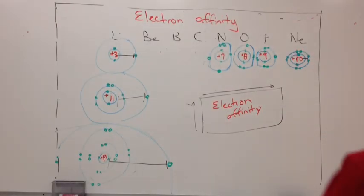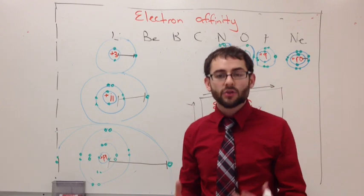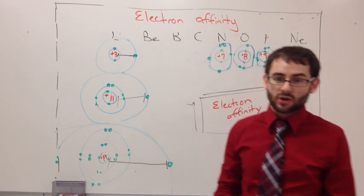The next trend is called electron affinity. What electron affinity tells you is how likely an atom is to gain another electron.